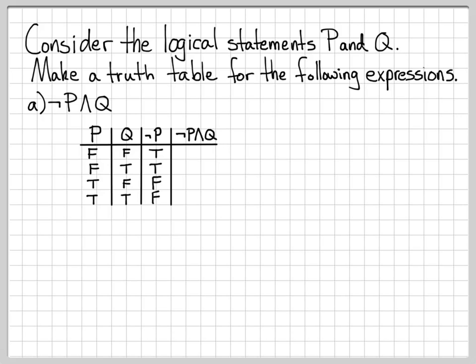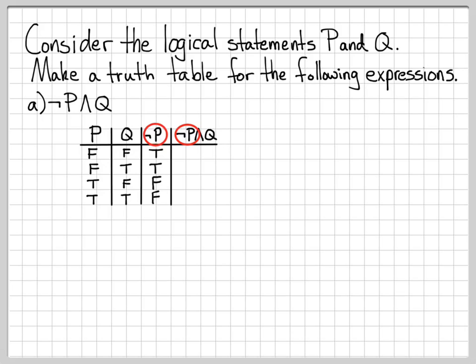So now we have a column for 'not P'. This is a pretty simple example. The next thing we can make is a column for the final overall logical expression. We can make that the last column of our table. We can easily fill this in now because I have a column for each part of this expression — 'not P' right here, and Q right here.